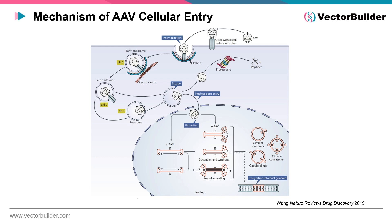AAV capsids employ diverse mechanisms to enter host cells. The primary method involves receptor-mediated endocytosis, where AAV capsids bind to specific cell surface receptors, initiating a cascade of events that leads to internalization. This mechanism often relies on interactions with heparin sulfate proteoglycans and various co-receptors. Subsequently, the endocytic vesicle containing the AAV capsid undergoes intracellular trafficking, ultimately reaching endosomal compartments.